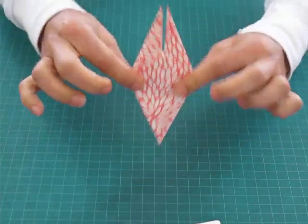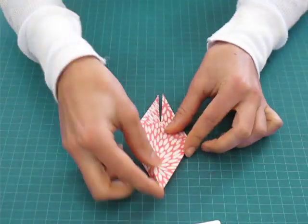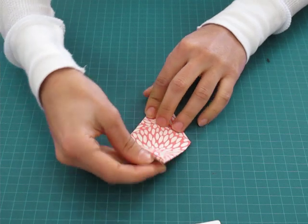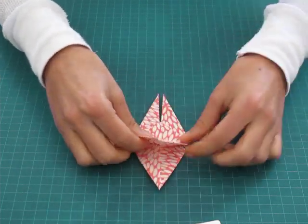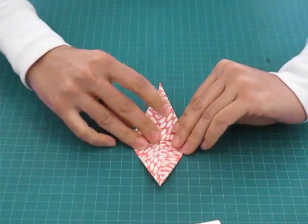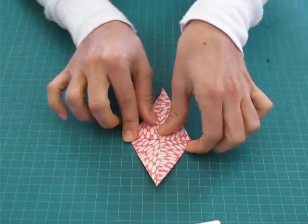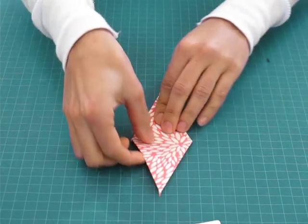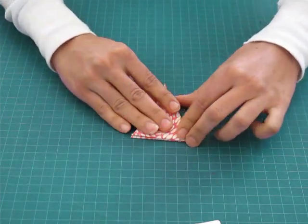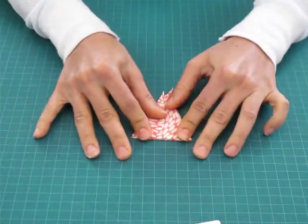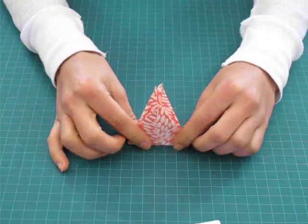Okay, now take the bottom, the corner furthest away from you, and flip it back. So you're going to make another triangle. So bring that back, flip your paper over and do the same. So those folds that you just made, those triangles are now your wings.